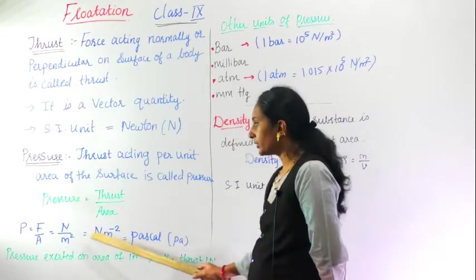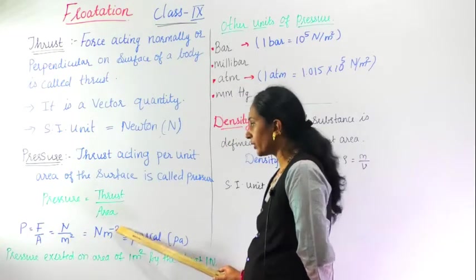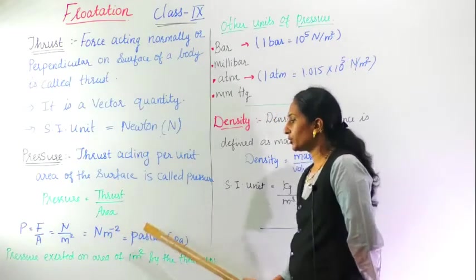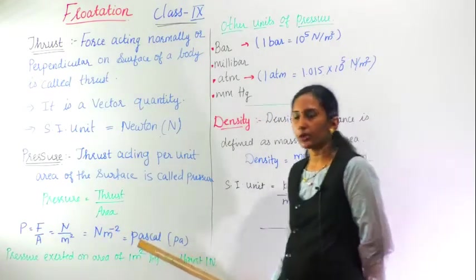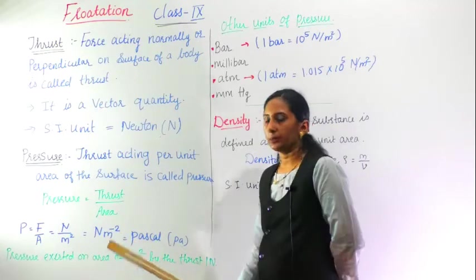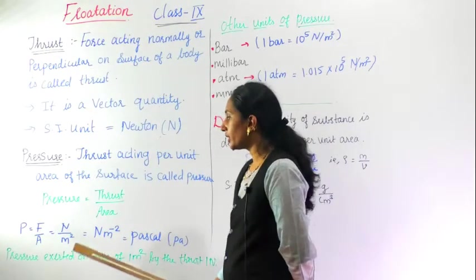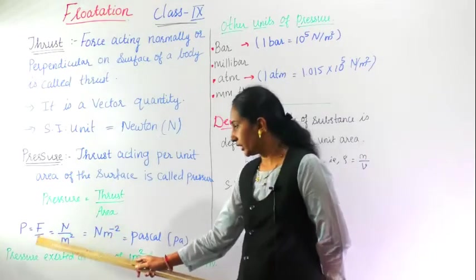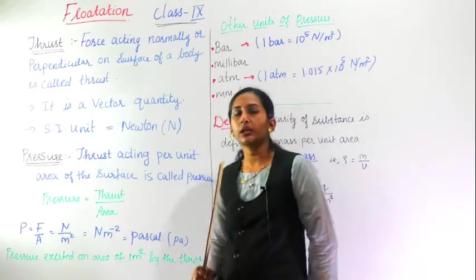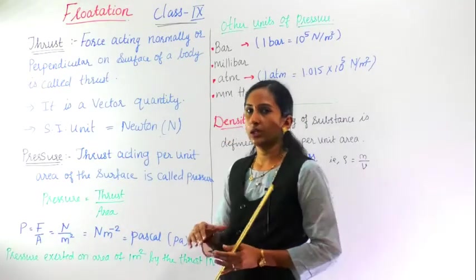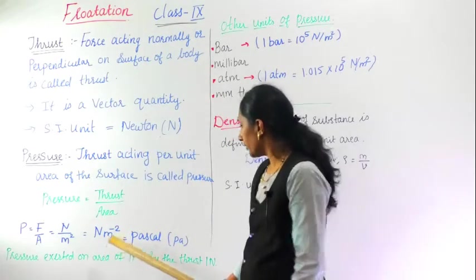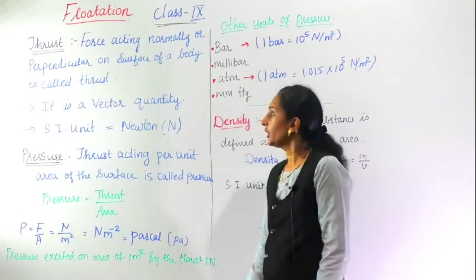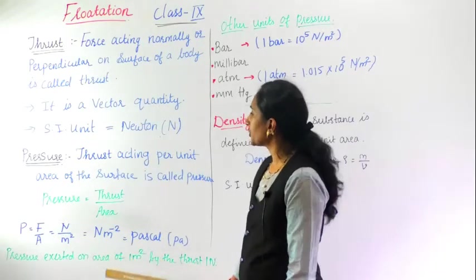That's why it is Newton meter minus 2, which is also called Pascal. In short it is written as Pa. What it explains: the pressure exerted on area of one meter - if one meter area is taken, the pressure exerted on that surface will be the thrust one Newton. Here we have completed the pressure.